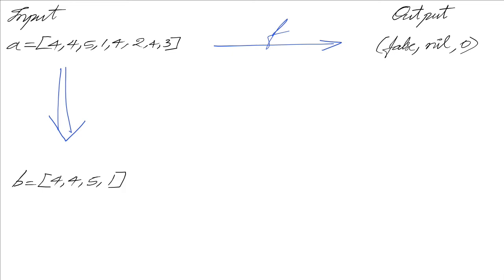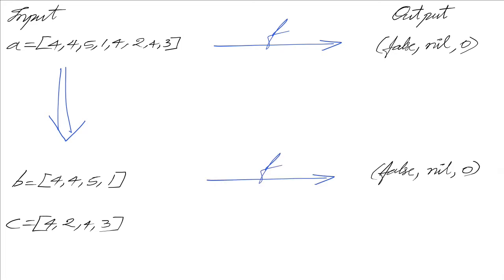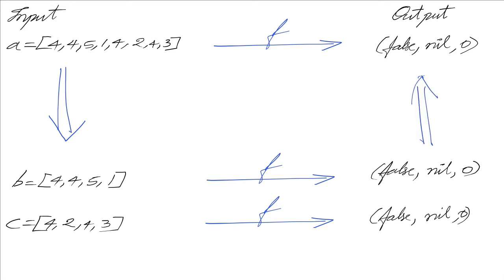Sublist B consists of the first half and sublist C consists of the second half. The first sublist results in this tuple, and the second sublist also has a tuple of false, nil, and zero as the output. In the combined step, by combining the results of the subproblems, we have to return false to produce the final output.